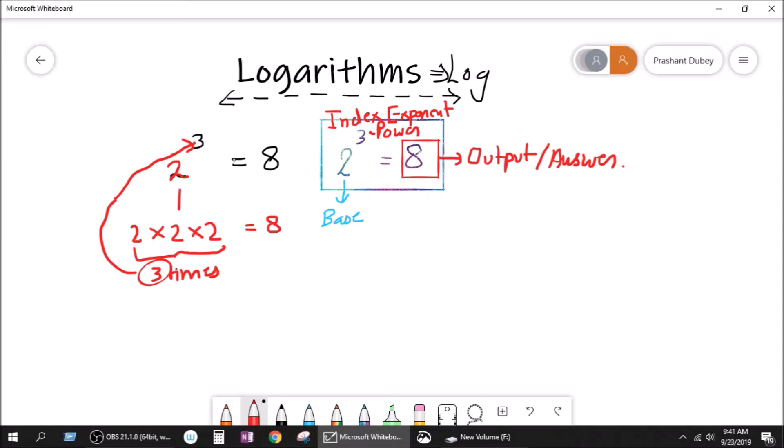So we can say base, power, and output or answer. So this base was 2, this power was 3, and this output was 8. Now, this is very important to understand if you want to have a good grip on logs. If you want to understand logs properly, this is what you have to understand.